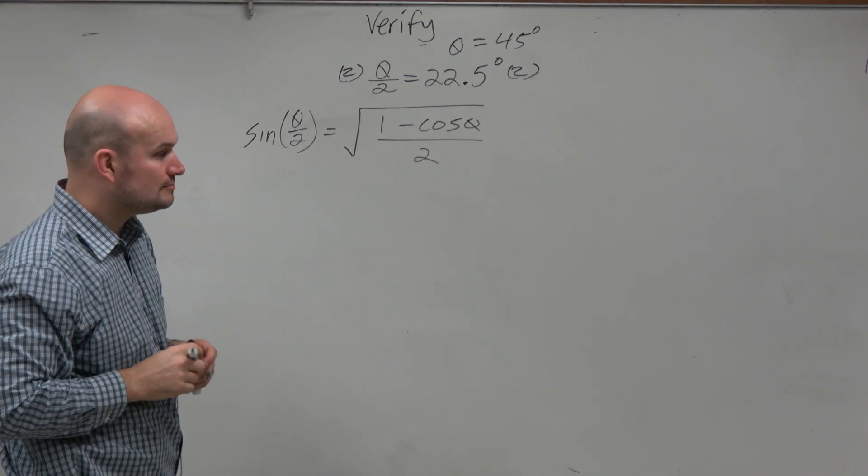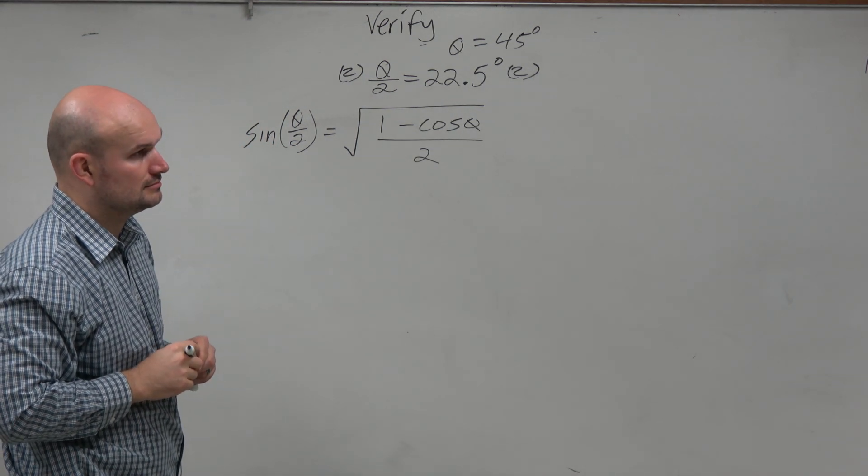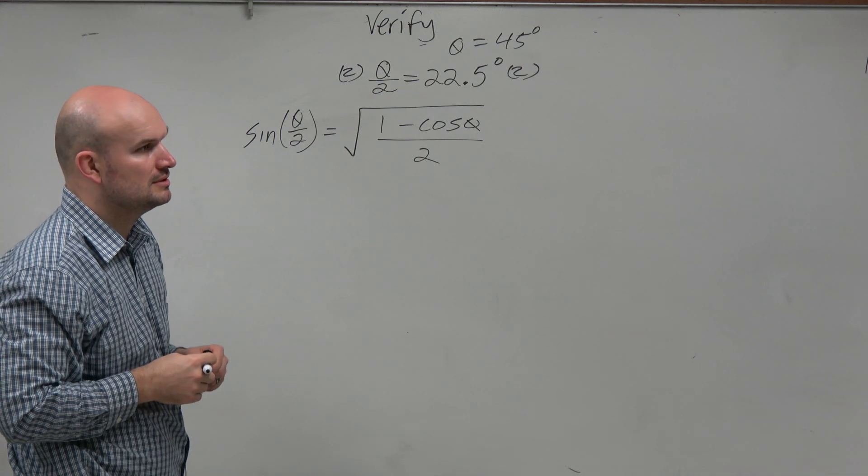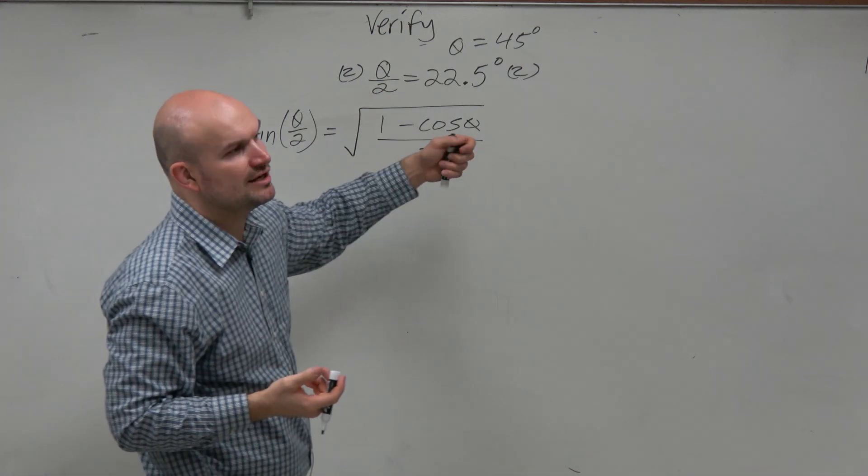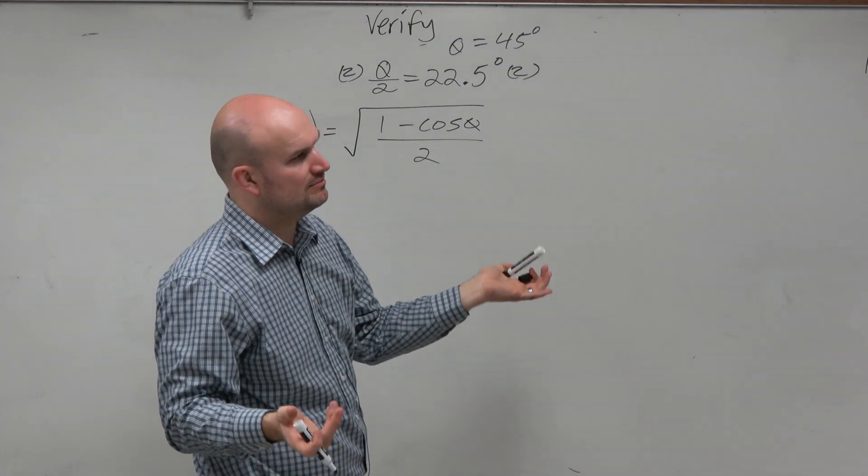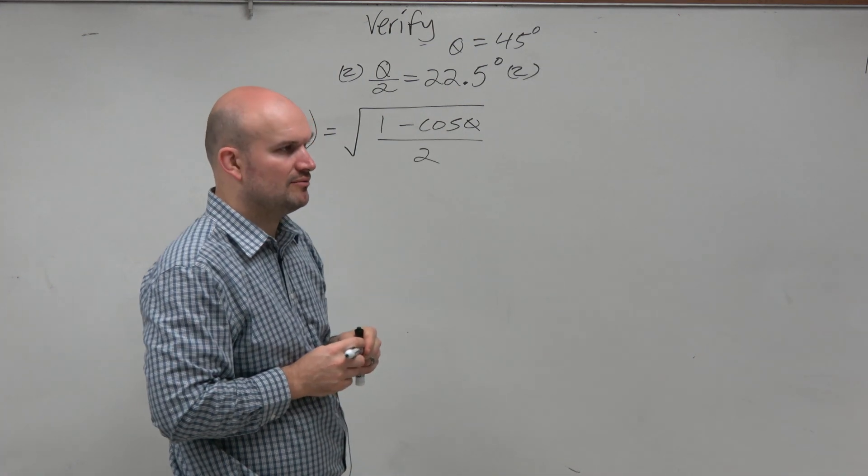And therefore, we can say theta is now equal to 22.5 times 2, which is 45 degrees. A student asks if it could be 47 degrees. But then we'd have to find the cosine of 47 degrees, which we wouldn't be able to do. So it wouldn't work that way.